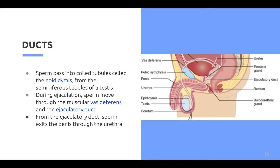The testes ducts, which include the seminiferous tubules and vas deferens, are involved in the creation and transportation of sperm. Sperm passes into the coiled tubules called the epididymis from the seminiferous tubules of the testes. During ejaculation, sperm moves through the muscular vas deferens and the ejaculatory duct. From the ejaculatory duct, sperm exits the penis through the urethra.